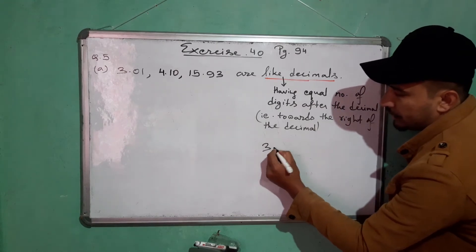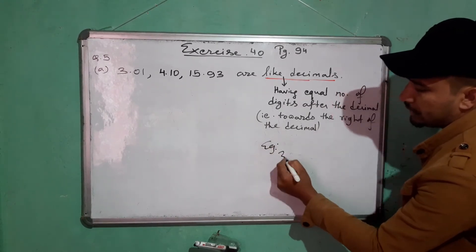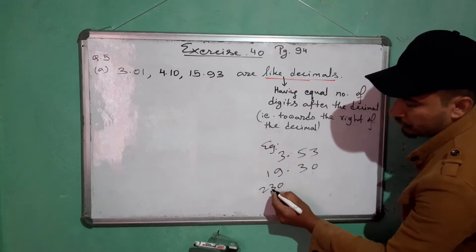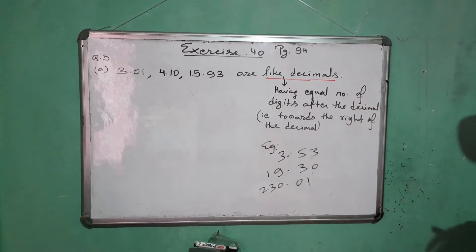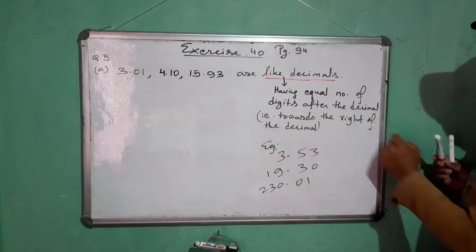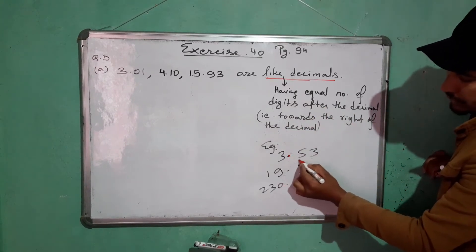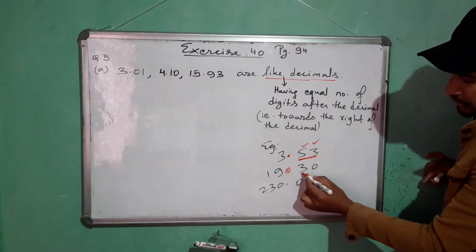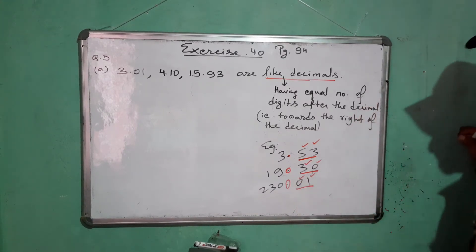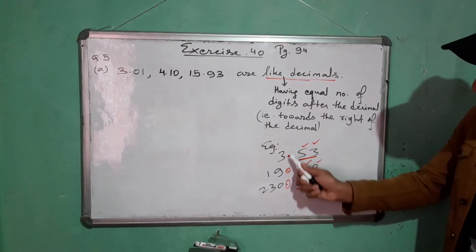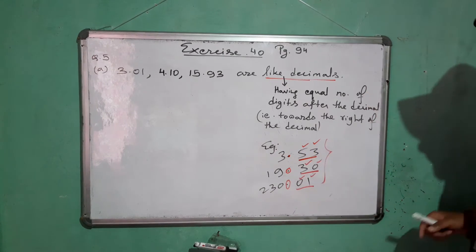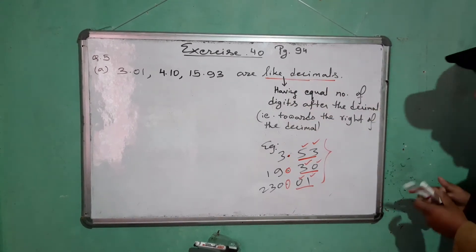For example: 3.53, 19.30, 23.02, 30.01 — these are like decimals. After the decimal, each has two digits: 5 and 3; 3 and 0; 0 and 2; 0 and 1. Since all these numbers have two digits after the decimal, they are called like decimals.